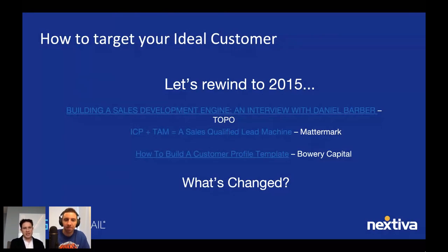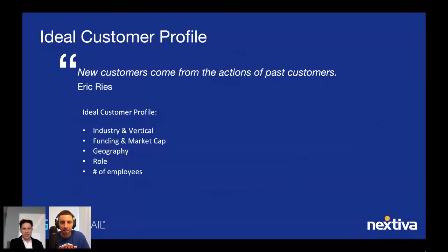Eric Ries, if you haven't read The Lean Startup — his statement is about as simple as it gets: you will attract more customers if you understand the current customers you have. There are some structural things you can look at in your ideal customer profile. You want to look at the vertical within that industry, whether a company is private or public, their funding amount or market cap, geography, the role of the individual you're selling to, and number of employees. These are all variables for building out your ICP.